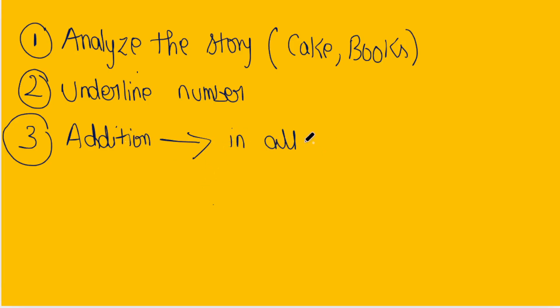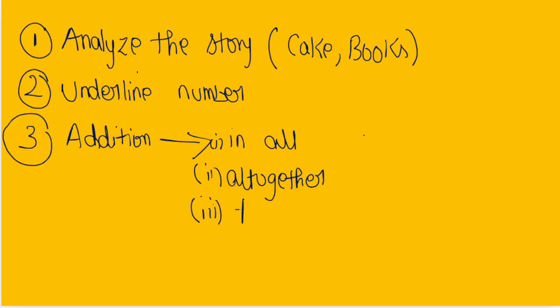The second clue word is 'all together.' If you see the word 'all together' in the question, you can directly do addition. The third clue word is 'total.' We will see a lot of sums based on the clue word total. The fourth clue word is 'combined.' If you see the word combined in a question, directly you can add the numbers.